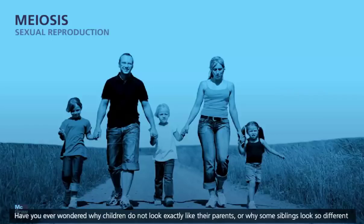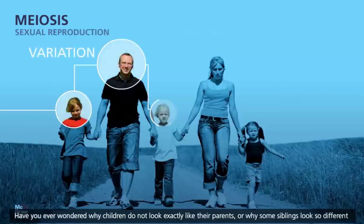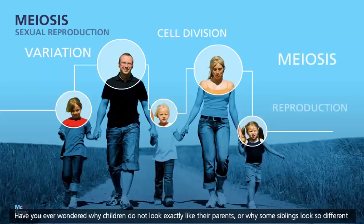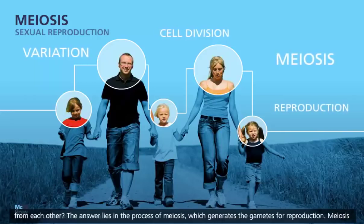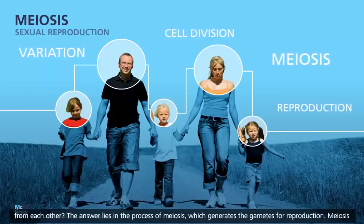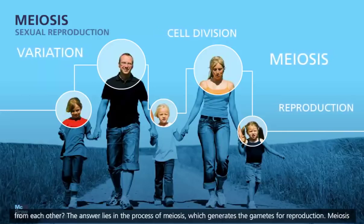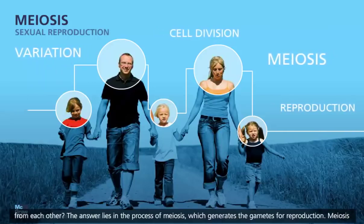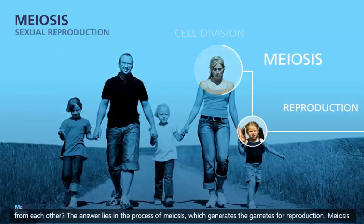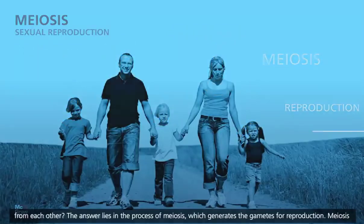Have you ever wondered why children do not look exactly like their parents, or why some siblings look so different from each other? The answer lies in the process of meiosis, which generates the gametes for reproduction.